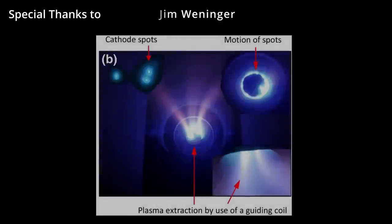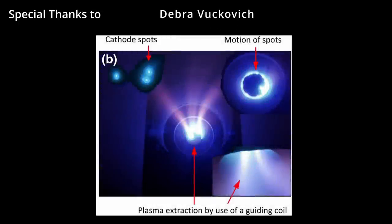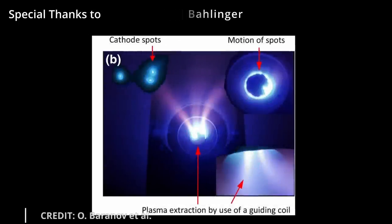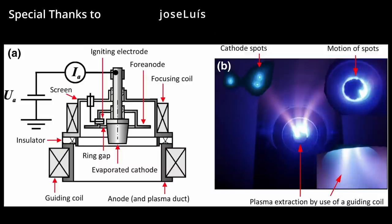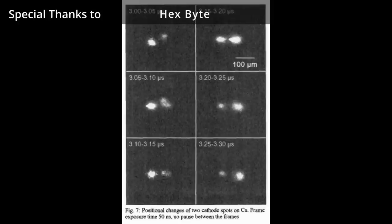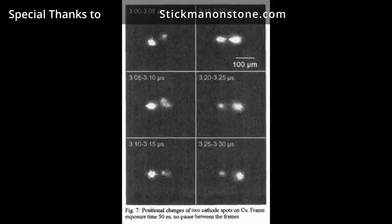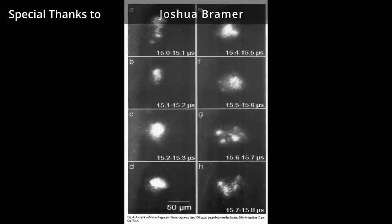Cathode spots are known to produce plasma from cathode material through a moving process. A lot of research is being conducted to try and understand the nature of the solid-to-plasma phase transition. One of the difficulties in studying this is the very small scale and very short durations of the arc spots, as well as the complexity of the physical processes and the environmental conditions involved.